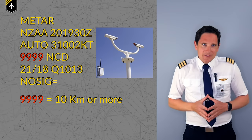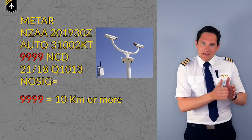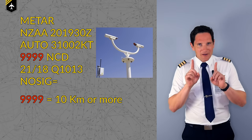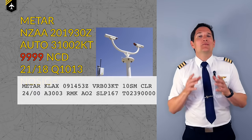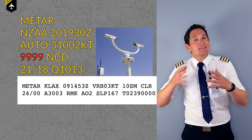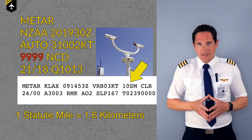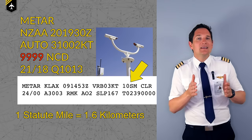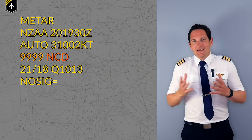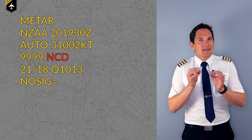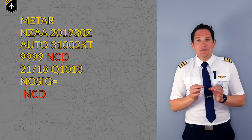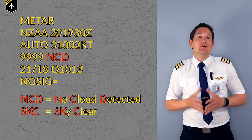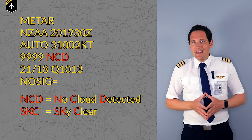In countries which use the metric system, the unit will be meters or kilometers and won't always be specified. However, in the United States, you will often see visibility denoted in statute miles, such as in this example from Los Angeles International where the visibility is 10 statute miles, equivalent to 16 kilometers. The letters NCD refer to the clouds and are an abbreviation for No Cloud Detected. This is similar to SKC or Sky Clear, which is often found in the US.